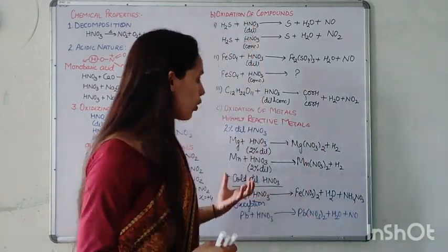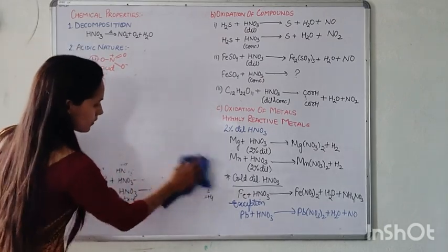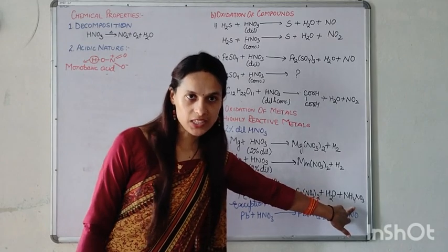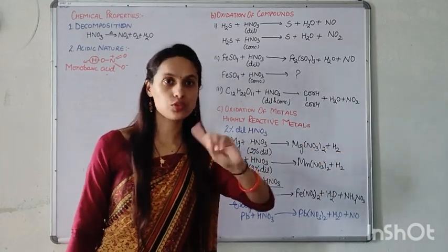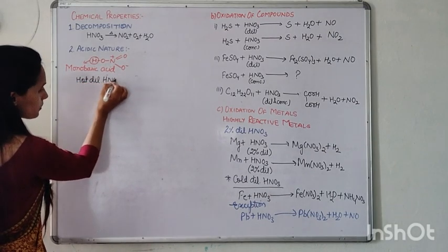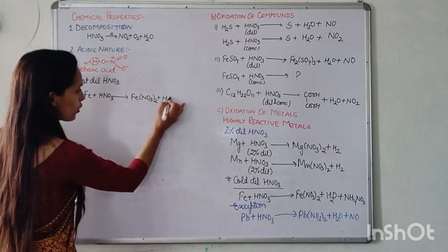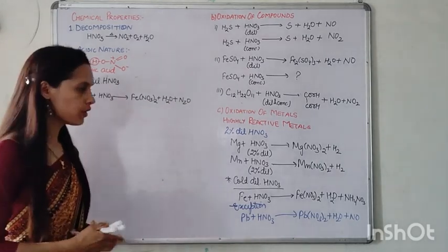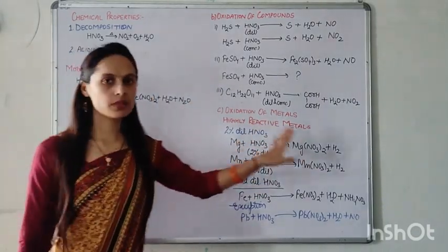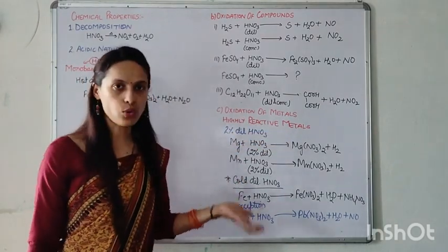With hot dilute HNO3, the ammonium nitrate decomposes due to temperature to form N2O. So the reaction becomes: Fe + hot dilute HNO3 → Fe(NO3)2 + H2O + N2O. The N2O comes from the decomposition of ammonium nitrate on heating.